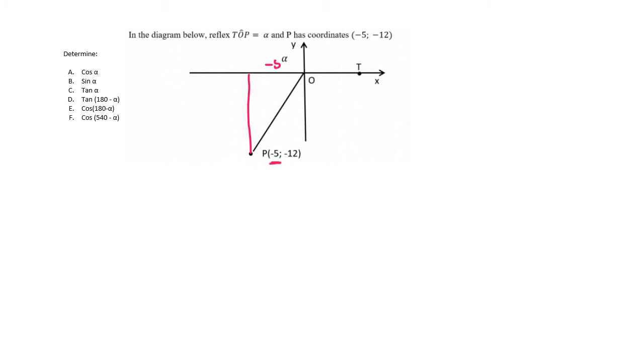Now this minus 5 is an x value, so that would be here, and this minus 12 is a y value. You then do Pythagoras to find the missing length, and you'd find that that is 13.